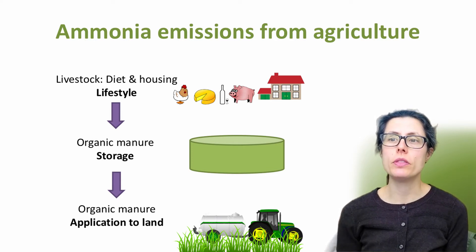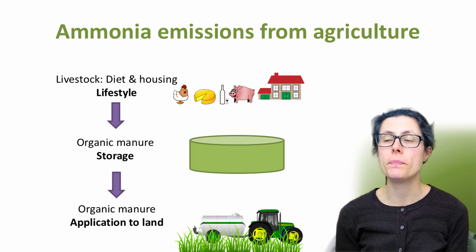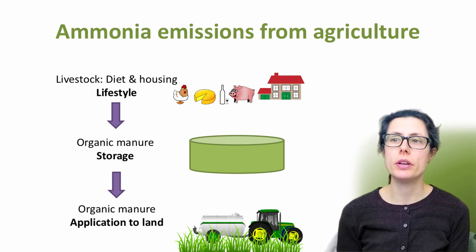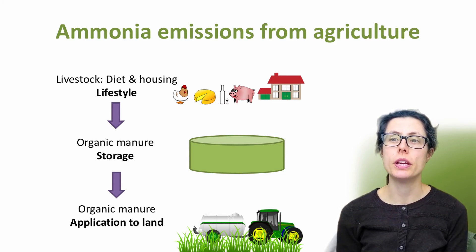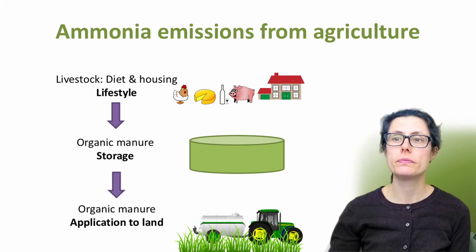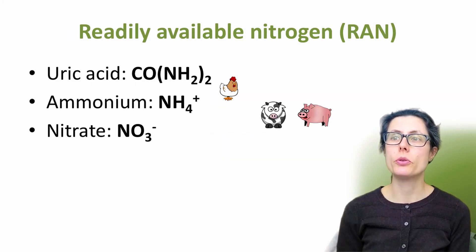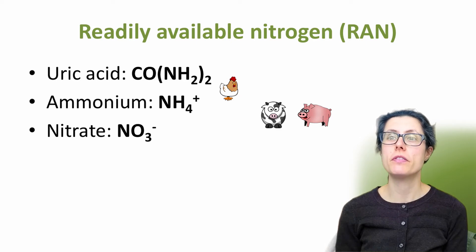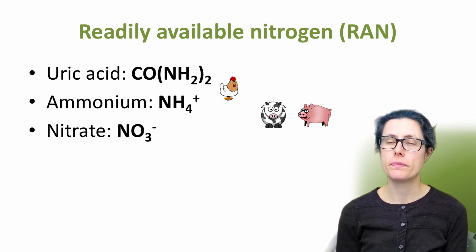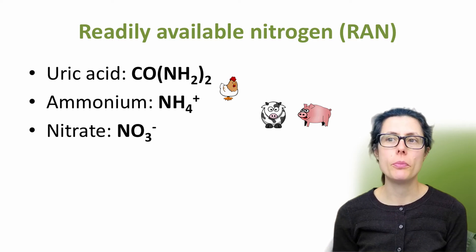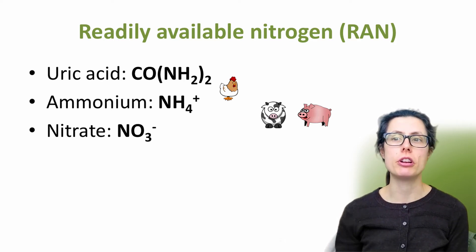The nitrogen within the manure, slurry and digestates can change over time depending on how much ammonia is released. By preventing ammonia emissions at all stages, the nitrogen is retained in the organic manure and is most beneficial to the crops. Ammonia emissions from organic manures come initially from readily available nitrogen, often abbreviated to RAN. RAN is the nitrogen that is potentially available for rapid crop uptake. The three main RAN compounds are uric acid, ammonium and nitrate.